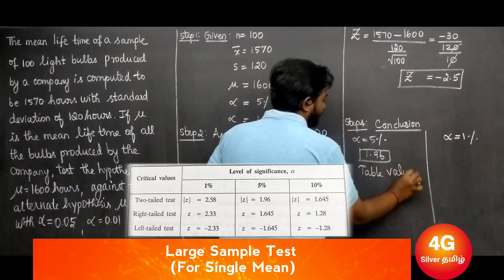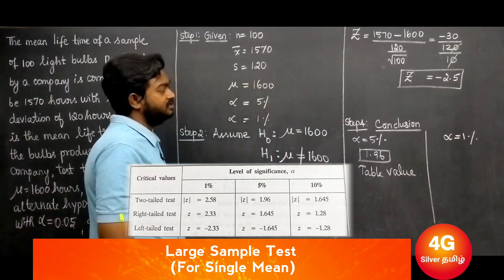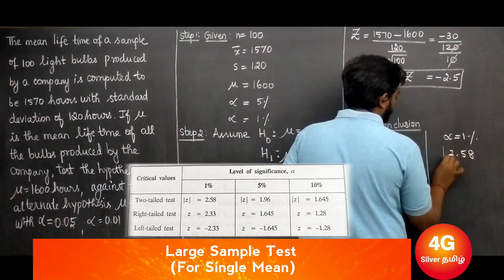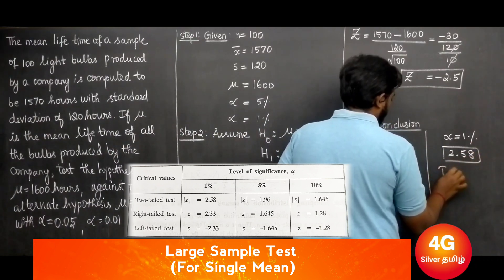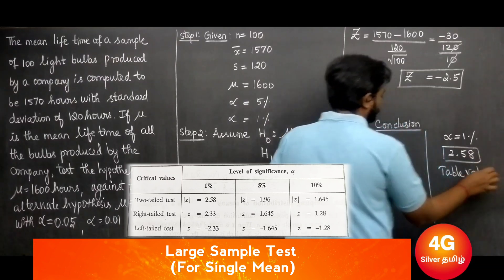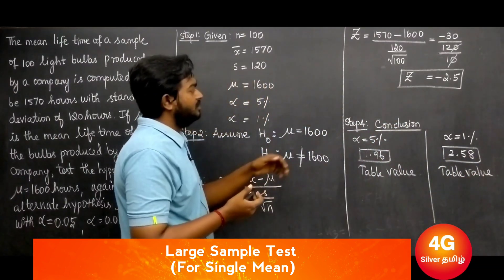For alpha equal to 1 percent, the table value is 2.58. Now we check and test the calculated z value against the table value.